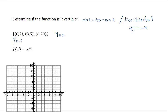If I had been given (0, 2), (3, 5), and instead of (6, 20), suppose I had been given (6, 2).